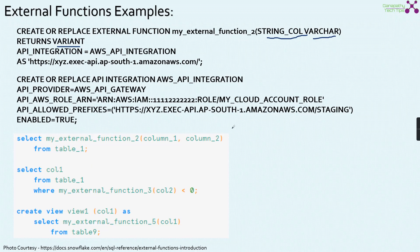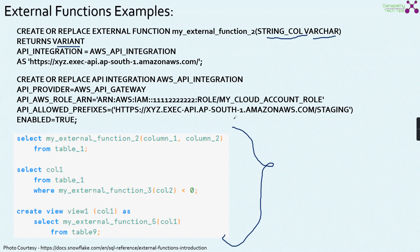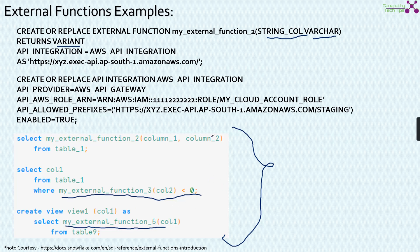The external function is not only limited to the select part of a query — that's very important to know. You can use select my_external_function(column_1, column_2) from table_1 in the typical way. But the same external function can also be used as a filter condition, or with a view. So it is not specific to the select clause; it can be used across multiple places like filter conditions and views.